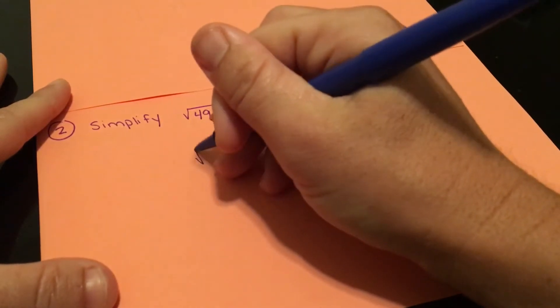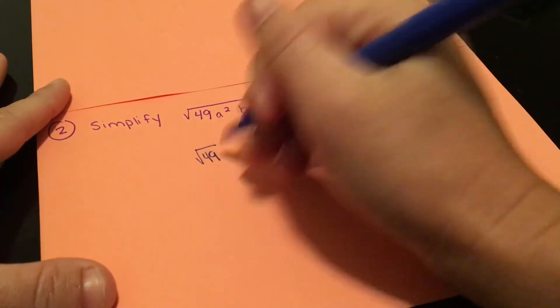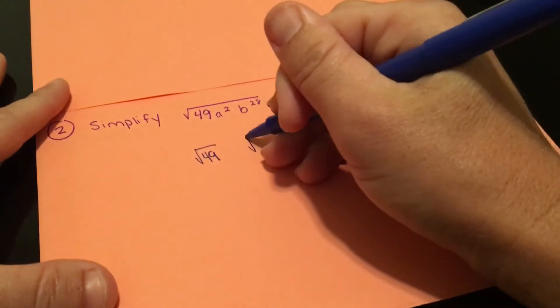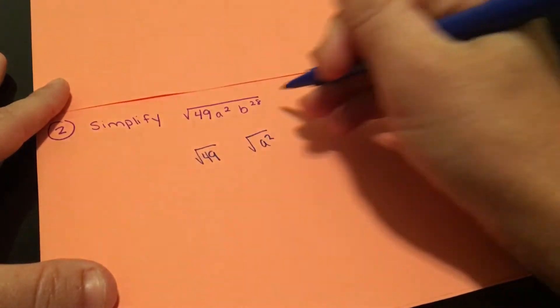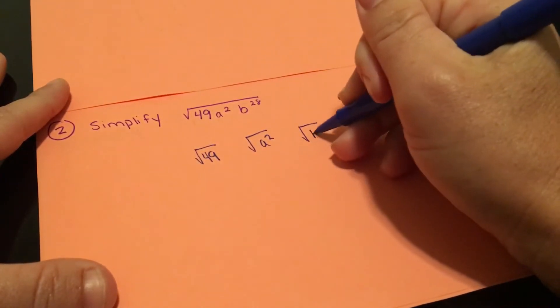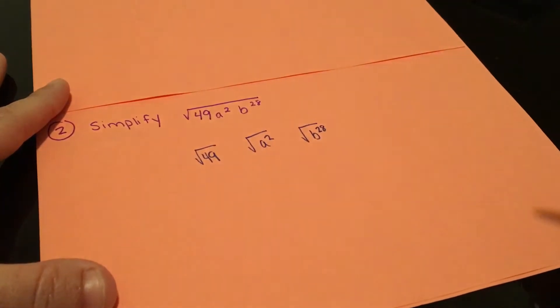We have a 49, so we have square root of 49. We have square root of a squared. And we have the square root of b to the 28th.